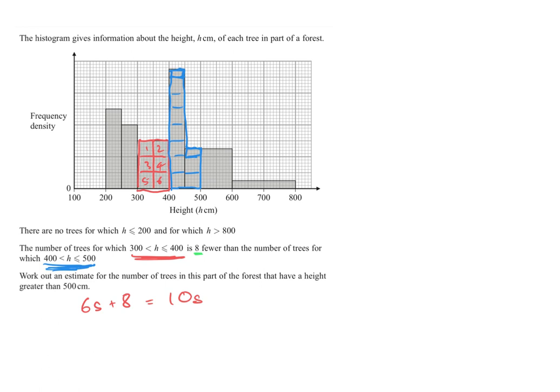So looking at this then we can say, well, 8 is equal to 4 squares, and so 1 square is equal to 2, and that is 2 trees. So we know what 1 square represents.